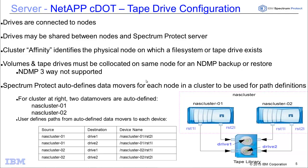Slide five covers how Spectrum Protect sees the tape drives attached to the NAS clusters. The drives are connected to the nodes, and the drives can be shared between a Spectrum Protect server and the NAS device. Cluster Affinity identifies the physical nodes on which a file system or tape drive exists. Because we do not support NDMP three-way backup, the volume and tape drives have to be co-located on the same node in order to do the NDMP backups or restores. Spectrum Protect will auto-define the data movers for each of the nodes in a cluster, but the Spectrum Protect administrator needs to define the paths.